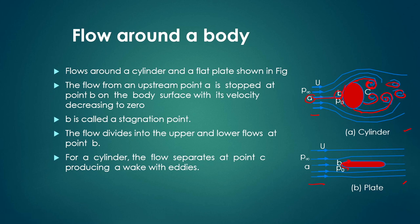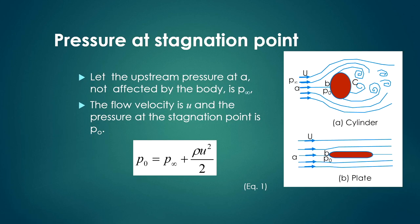For a cylinder, the flow separates at point C, producing a wake with eddies. There may be several eddies formed according to the flow rate. In the case of a flat plate, there is no formation of eddies. Now, an important point: what will be the pressure at the stagnation point if the pressure at the uniform flow region is P∞ and the pressure at the stagnation point is P₀, while the uniform velocity is U? We apply Bernoulli's theorem to find P₀.